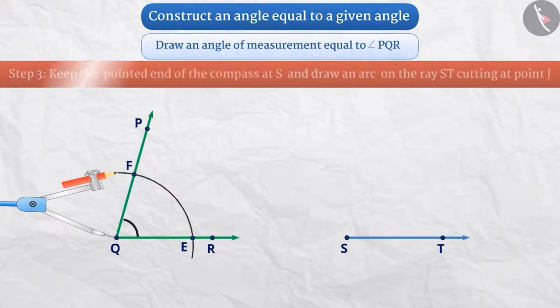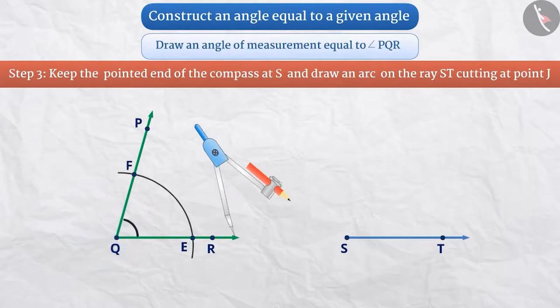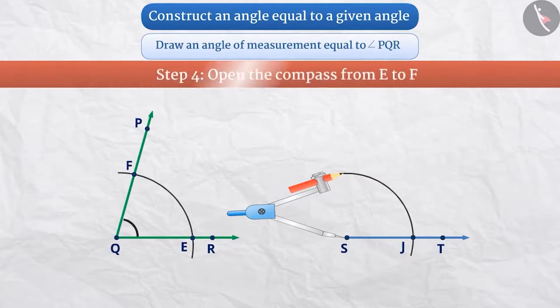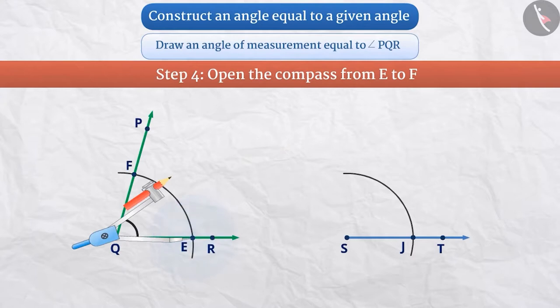Step 3: Let the distance taken in the compass remain intact. Keep its pointed end at S on ray ST and draw an arc cutting at point J. Step 4: Now place the pointed end of the compass at point E and open the compass to the distance from E to F.